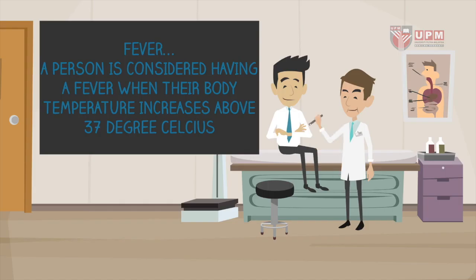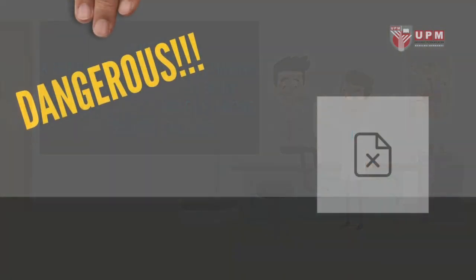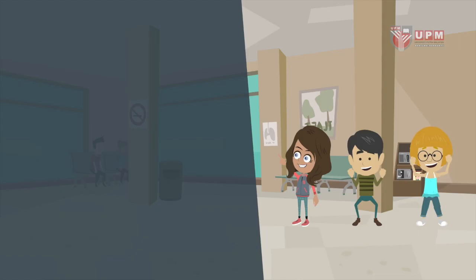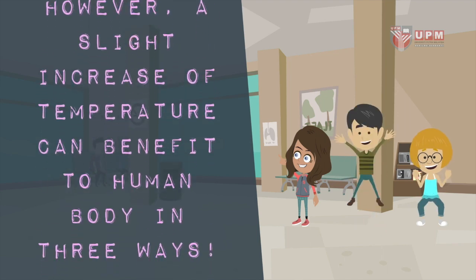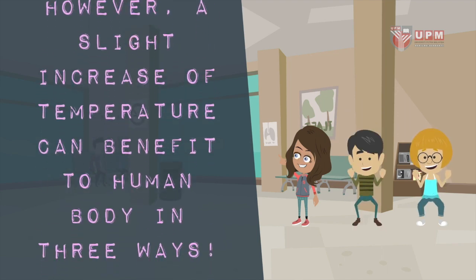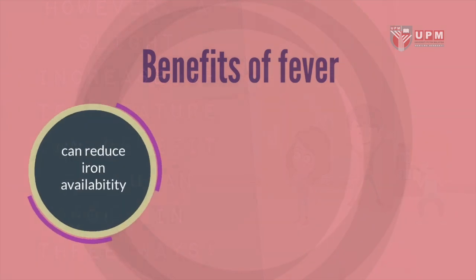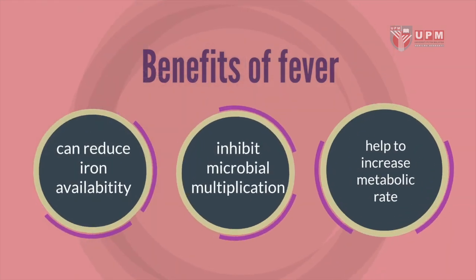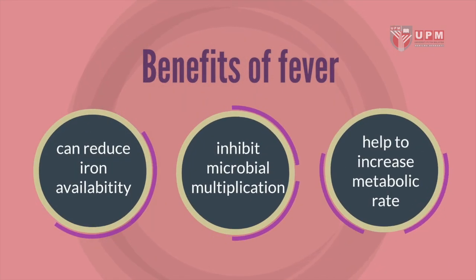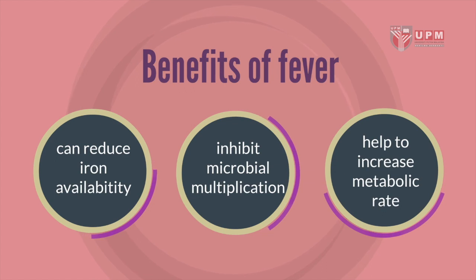Fever. A person is considered to have a fever when their body temperature increases above 37 degrees Celsius. However, a slight increase in temperature can benefit the human body in three ways. First, it can reduce iron availability. Second, it inhibits microbial multiplication. Third, it helps to increase metabolic rate.